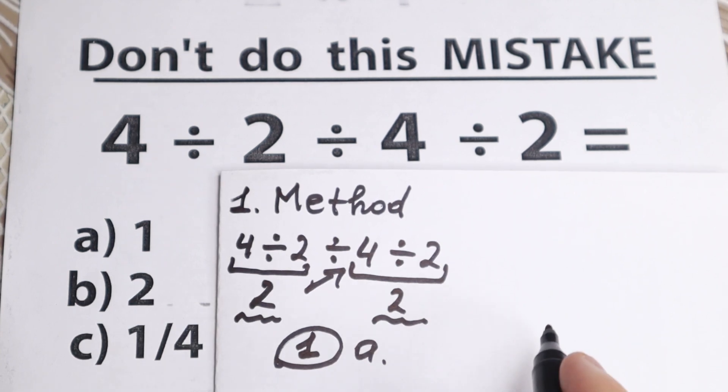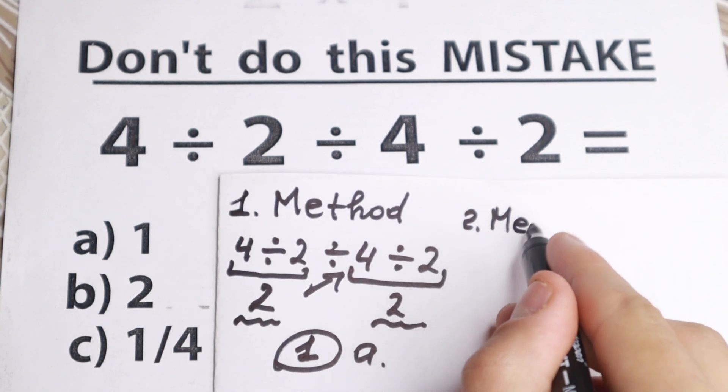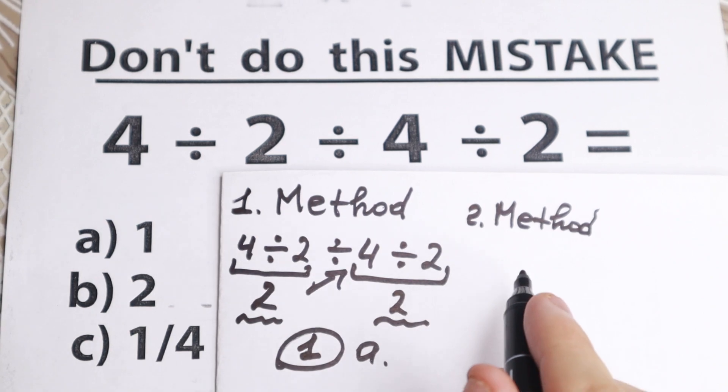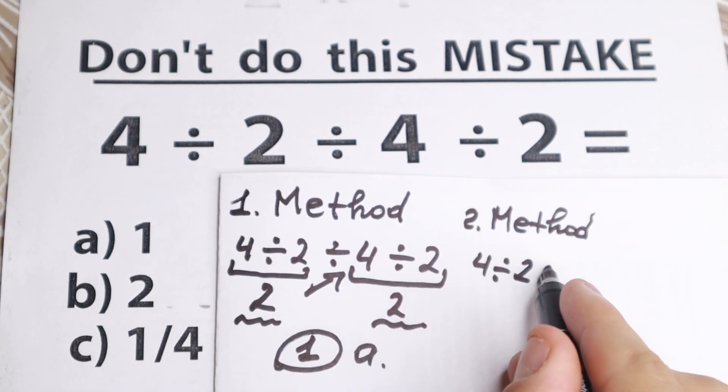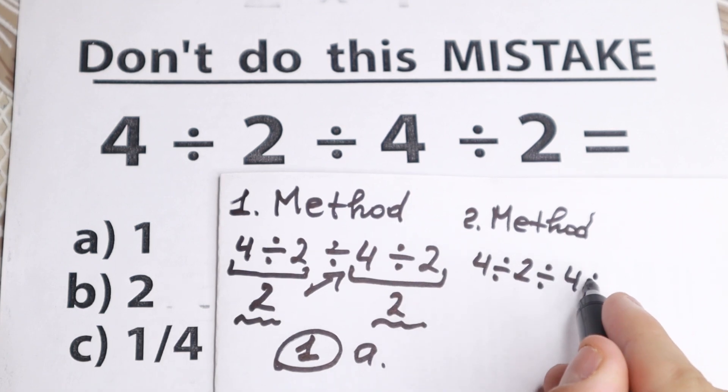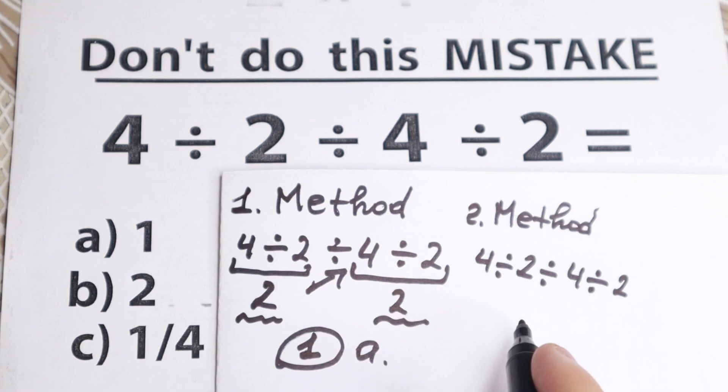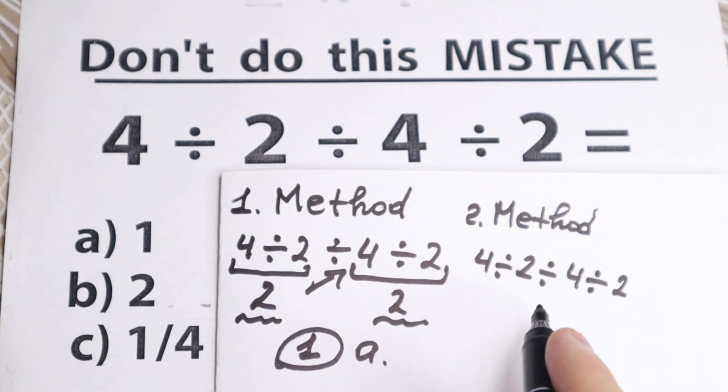But I want to show you the second method. Take a look closely, we have the second method. If we go from left to right, we have this situation, we have 4 dividing by 2, dividing by 4, and dividing by 2. But in the second method, I want to go from left to right.